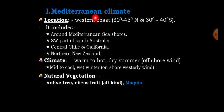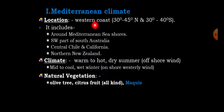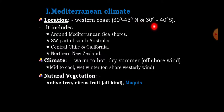Mediterranean climate is classified under the warm temperate climate zone. This region is located on the western coast of the globe, specifically between 30 to 45 degrees north and 30 to 40 degrees south.